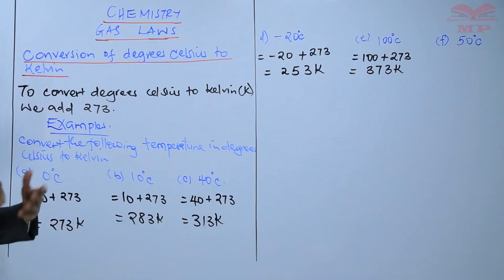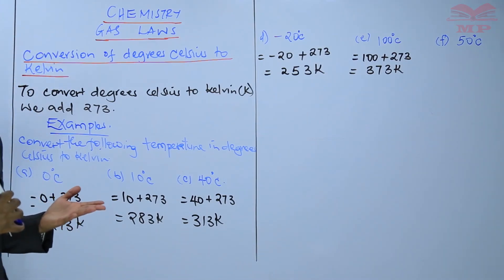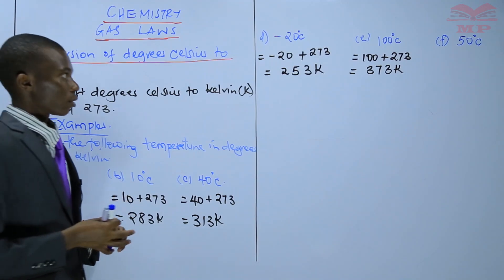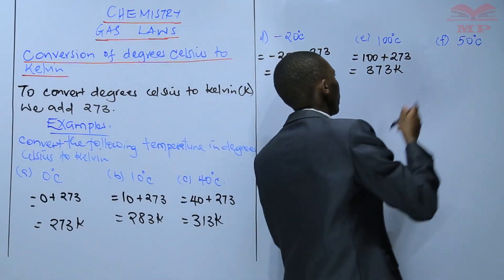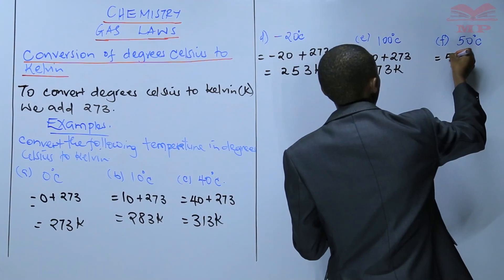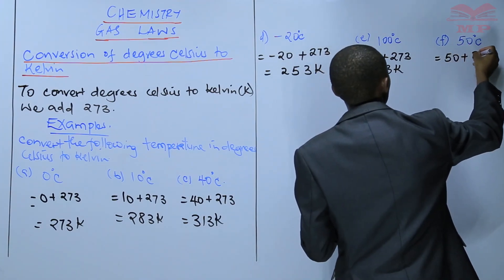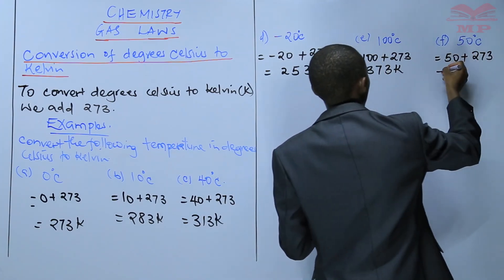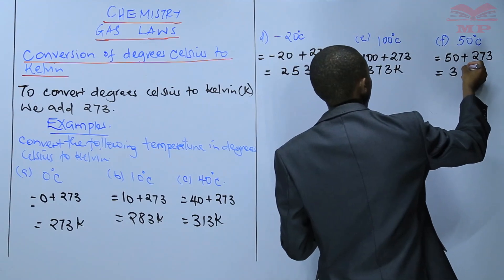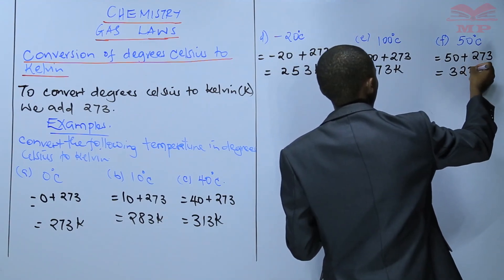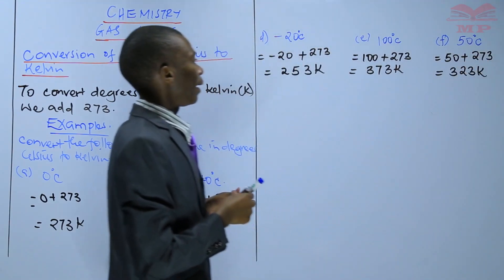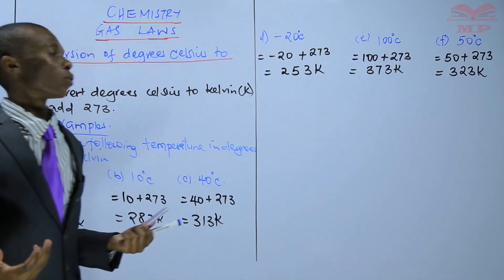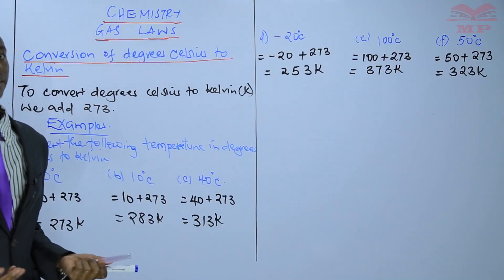That is how you convert temperature from degree Celsius to Kelvin. Lastly, we have 50 degree Celsius: 50 plus 273 gives you 323 Kelvin.